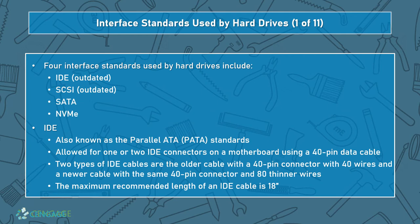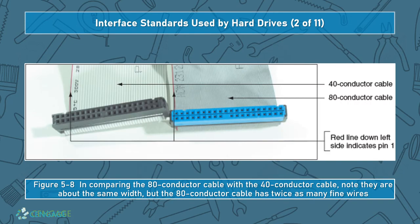There are four interface standards traditionally used by hard drives. The first two are outdated but we cover them for legacy support. IDE — also known as Parallel ATA or PATA — was one of the first hard drive standards for personal computers. It allowed one or two IDE connectors on a motherboard using a 40-pin data cable; a newer cable later used the same 40-pin connector but with 80 thinner wires. The maximum recommended cable length was 18 inches, and each cable traditionally only allowed two drives. Once you went beyond four drives, you needed a new machine. We can see the 80 and 40 conductor cables — the lines are much finer on the 80-wire cable.